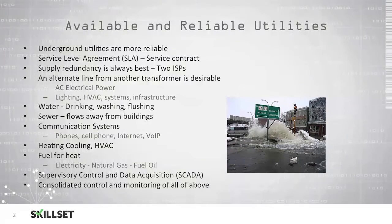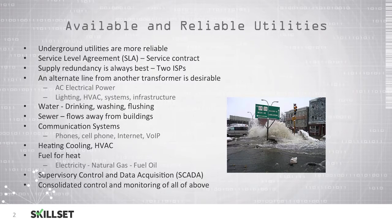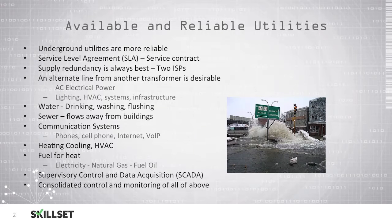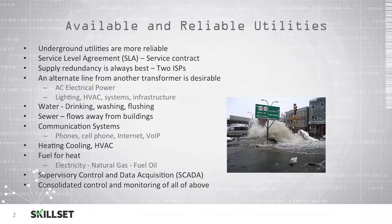Supply redundancy is always best, so if possible you should have two internet service providers. That way, if one goes down, you will still have a connection through the other ISP. You should also attempt to accomplish this for your electrical system, where you can have an alternate line to your facility from a different transformer. This way, if electrical power goes down on one grid, you will still have electrical power from the other grid.